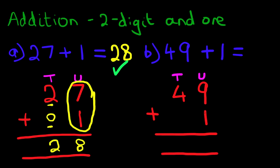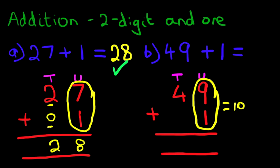The first thing we do is add the column on the right-hand side first — the units column. 9 plus 1. What is 9 plus 1? We know from our number bonds to 10 that the answer is 10. How do we write this down? We put 1 over here and 0 over here — that is 10. This 1 has now become part of the tens column. We've added the units.